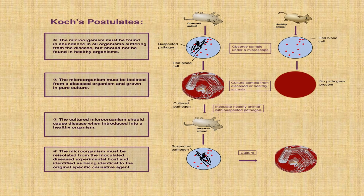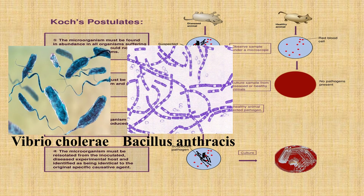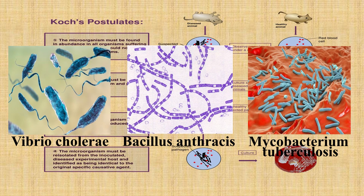Pasteur's work on germ theory was built on by the German doctor Robert Koch, who proposed four criteria, or postulates, that are needed to establish a causal link between an organism and a disease. He used this to establish the causative agent of cholera, anthrax, and tuberculosis, the latter of which he won a Nobel Prize for in 1905.